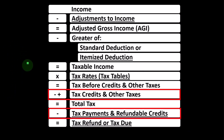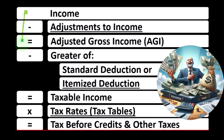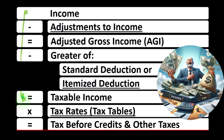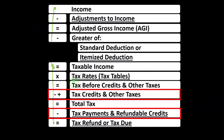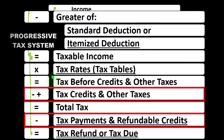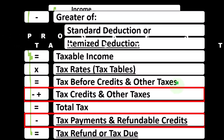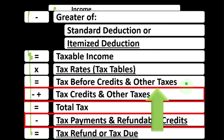We're at the bottom part of the income tax formula where the credits live. The first half of the income tax formula is basically an income statement ending not with net income but with taxable income. Taking that taxable income and calculating the tax on it — not using a flat tax but a progressive tax system — gets us to the tax before credits and other taxes, including things like self-employment tax if you have a Schedule C business.